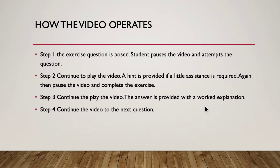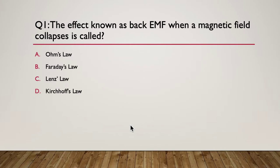And then we'll continue the video to the next question and continue it so on and so forth. So our first question is Question 1: The effect known as back EMF when a magnetic field collapses is called what? A. Ohm's law, B. Faraday's law, C. Lenz's law, or D. Kirchhoff's law. So pause here.